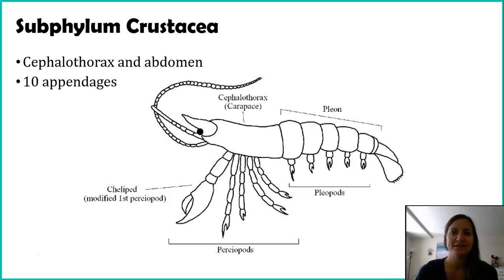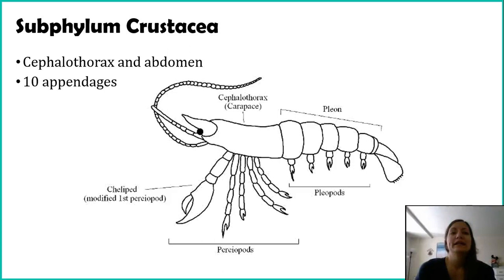Our insects have to go through ecdysis, and the next group we'll talk about also goes through it. So just keep that in mind — these organisms have that hard outer shell, and if they want to grow, they've got to get rid of that shell. In subphyla Crustacea, we do see body segments as well, but different ones.